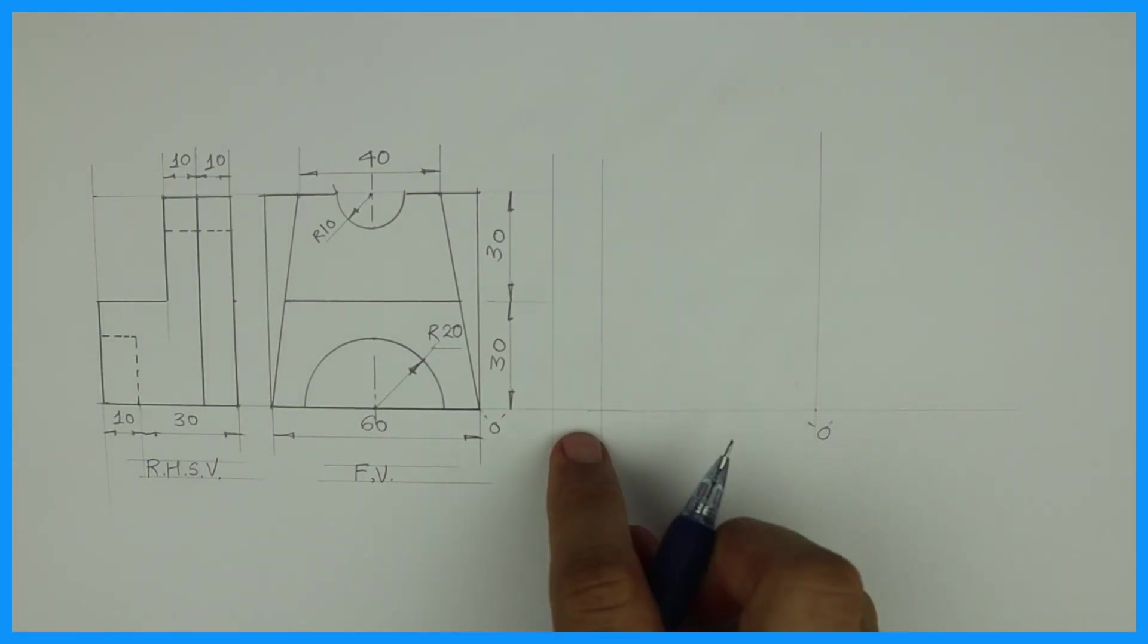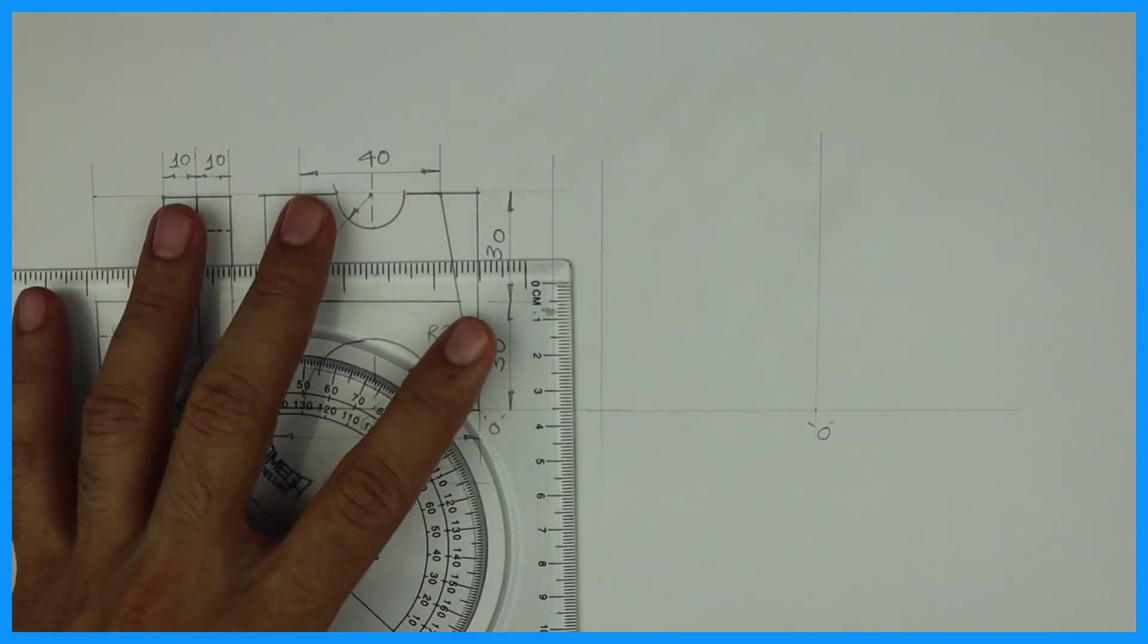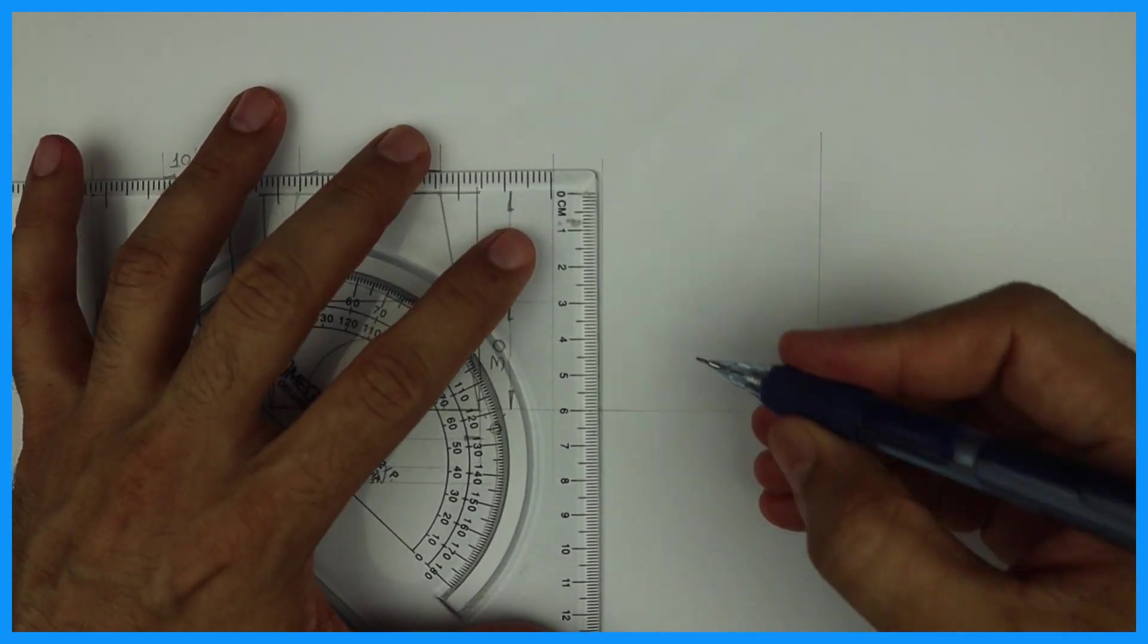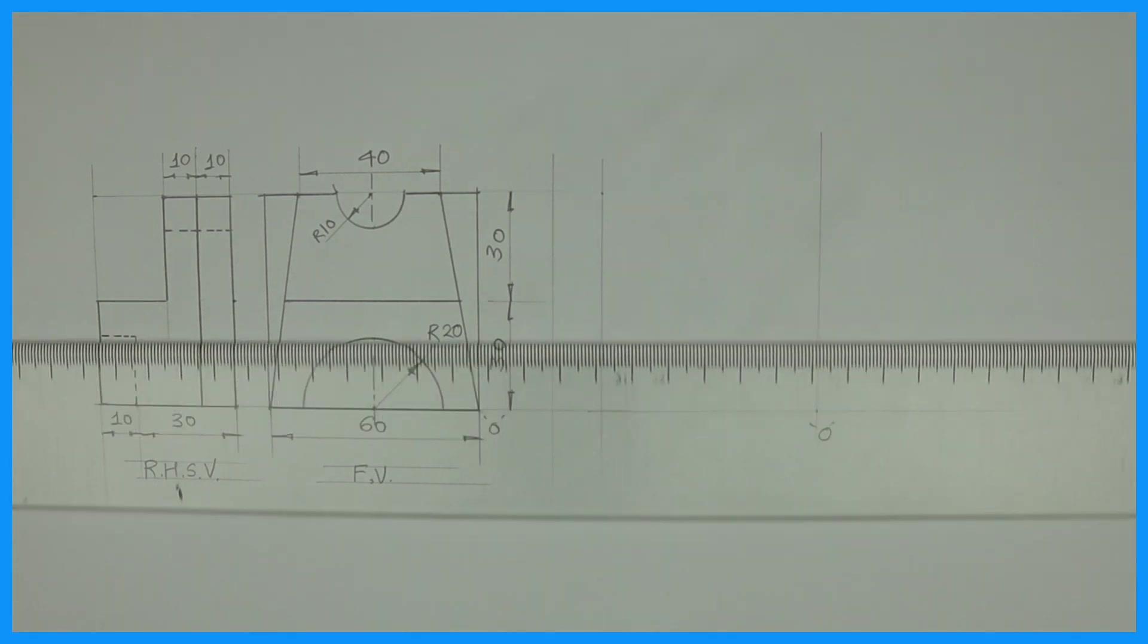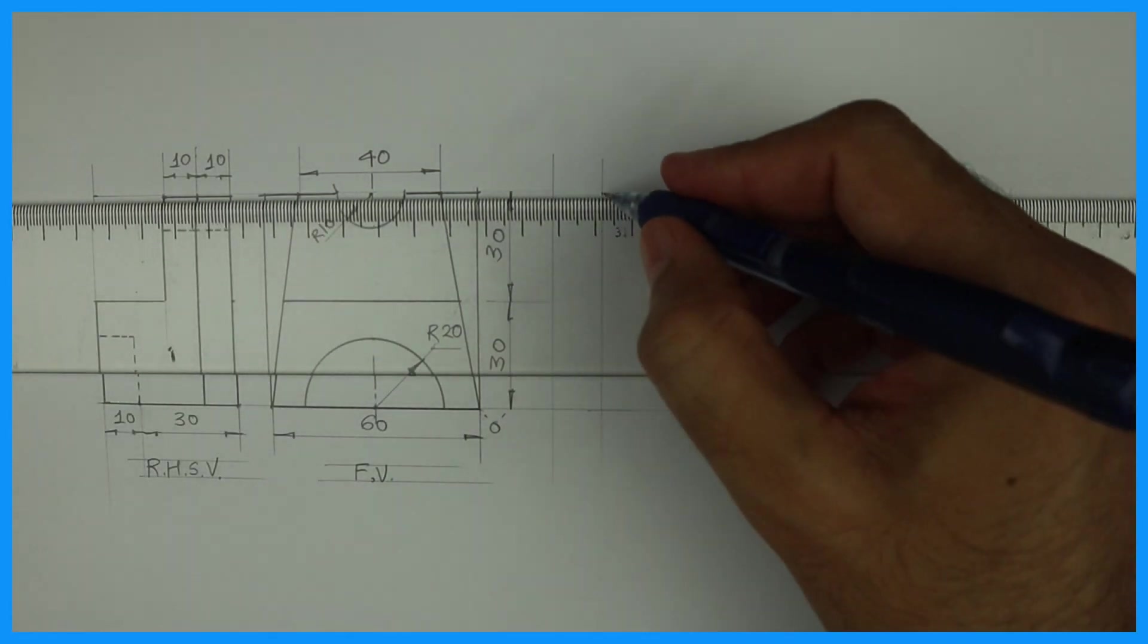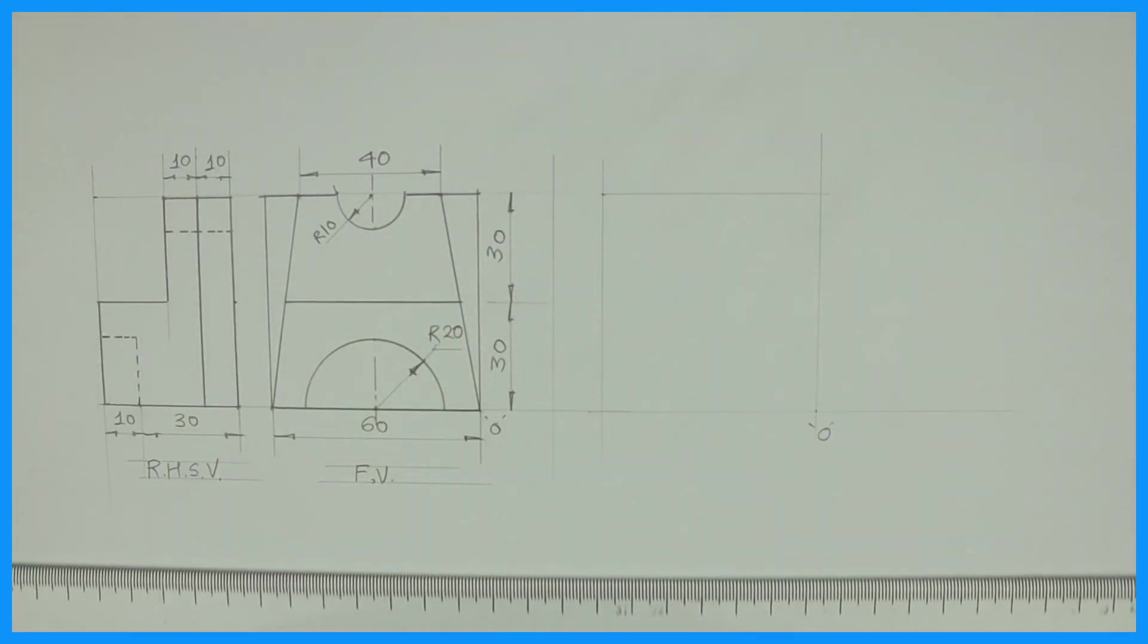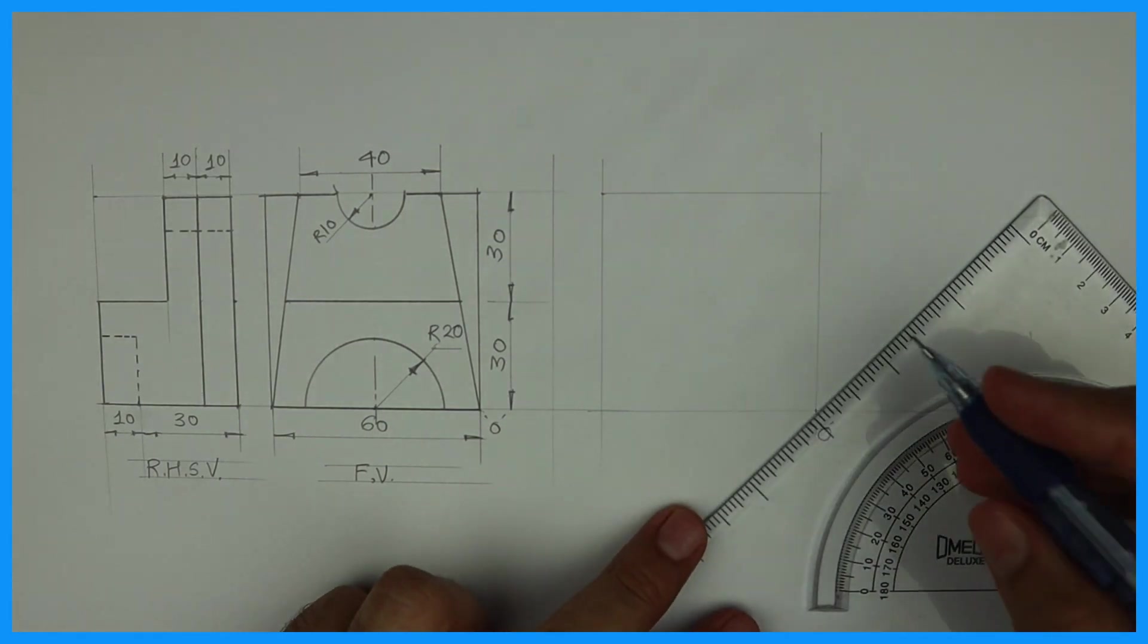Origin is here. Height is 60. So first you draw the box.